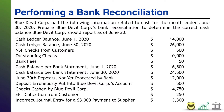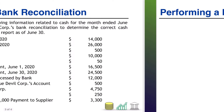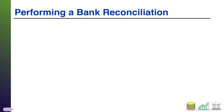Welcome back. So here we go. I'm going to go over to my blank slide and establish that we need two different columns to compare here. We need a bank and we need a book side of information. There's no rhyme or reason — one doesn't have to be on the left and one doesn't have to be on the right. Bank on the left, books on the right.